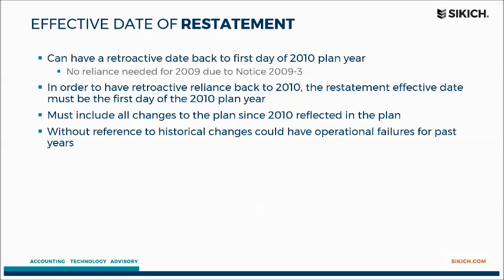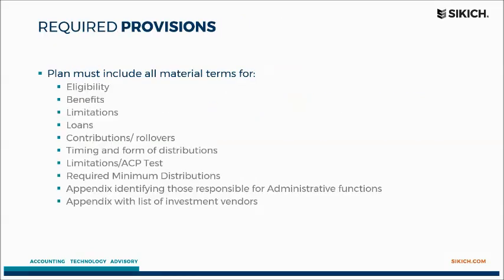2020 will be here before we know it, so know what's coming down the line. The plan document, similar to what you have now, must include all material terms of the plan — eligibility, limitations, and all operational aspects. Some of these are IRS rules; others are choices you make about how you want your plan to operate, such as whether you offer loans. All of that needs to be clearly outlined. You're likely going to have an appendix outlining administrative functions — communicating to participants how you do certain things, like how often you allow changes in a particular area.